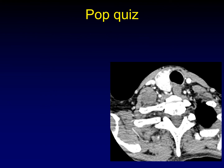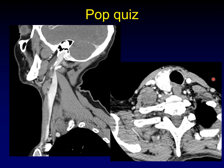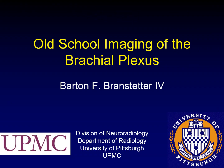Let's conclude the lecture with a pop quiz. On a contrast-enhanced CT through the lower neck there's a mass, but where is it and what is its relationship to surrounding structures? Is it in the scalene triangle, in the anterior scalene muscle, or anterior to it? It's hard to tell on axial CT, but pulling up a sagittal reformatted image, all of a sudden the anatomy comes into view: there's the anterior scalene muscle, the middle and posterior scalene muscles, the subclavian artery, and the mass is running right through the scalene triangle — it's a schwannoma of the brachial plexus. Sagittal images to the rescue once again. That concludes the lecture on brachial plexus imaging.